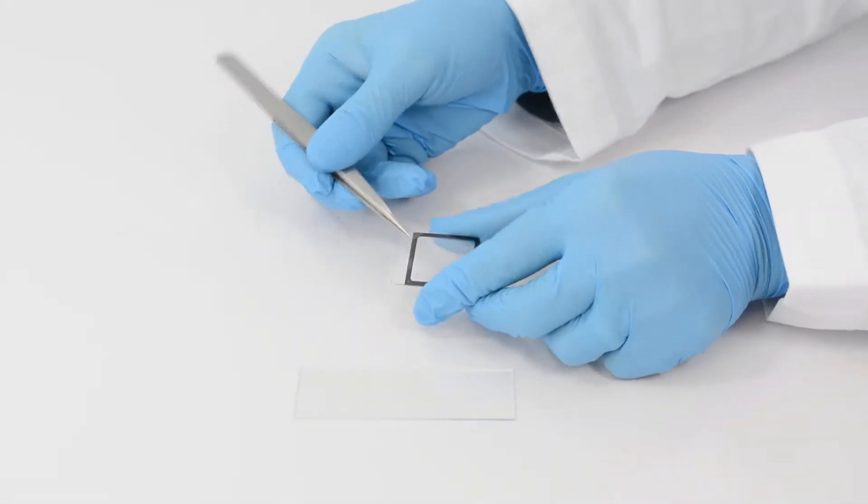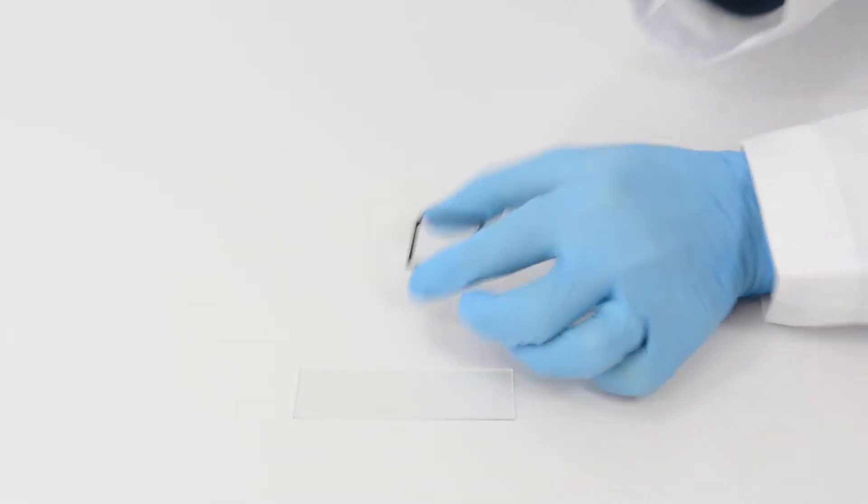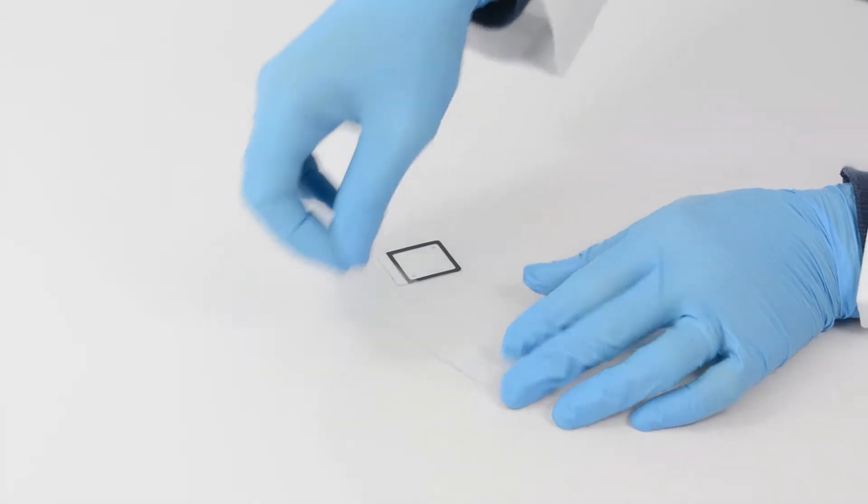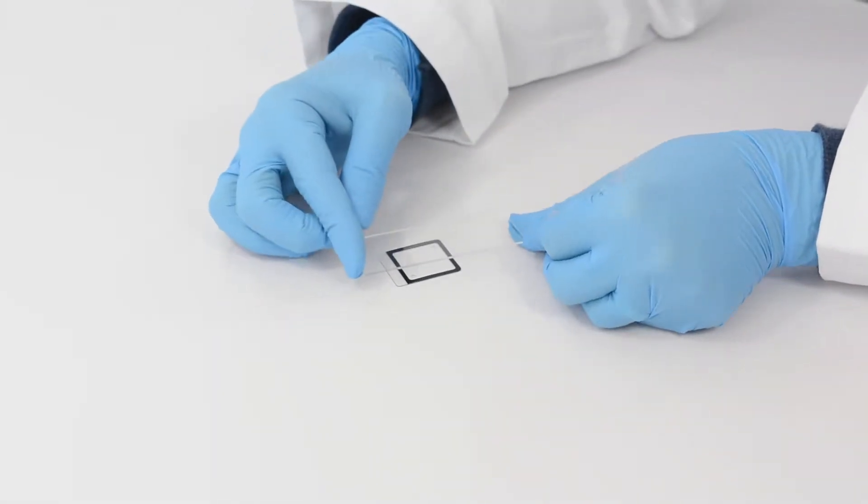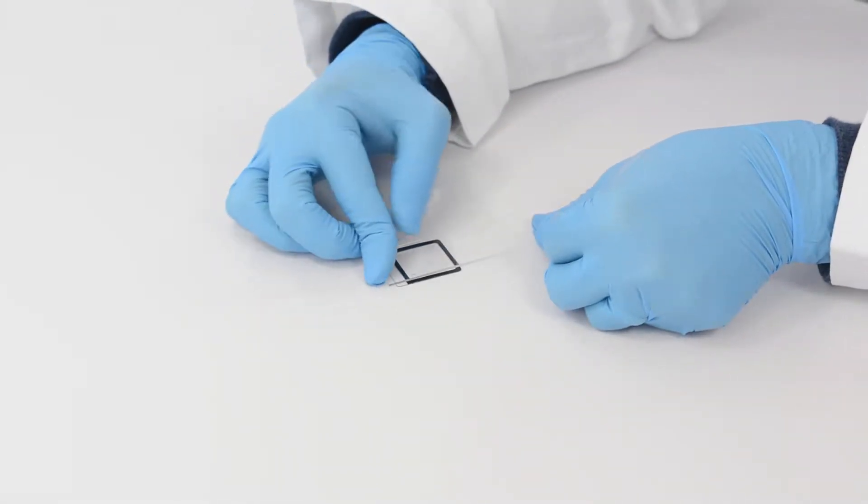Start by removing the liner from the adhesive. With the adhesive side of the chamber facing up, place a slide on top of it and press down.